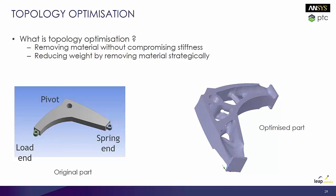So, topology optimization — what is it? Basically it's a way of removing material without compromising stiffness. A lot of Formula SAE is driven towards keeping the weight to an absolute minimum. You don't want things being too light because then they won't be as strong. So how do you know where to remove material from so it's not going to compromise the stiffness?